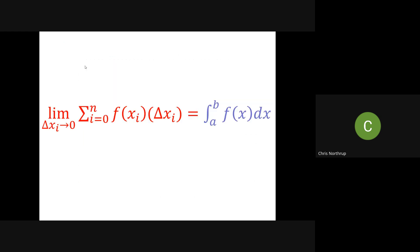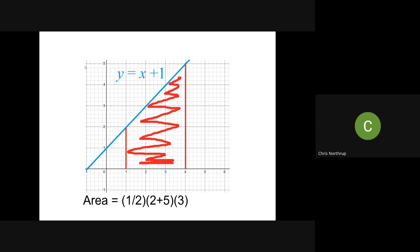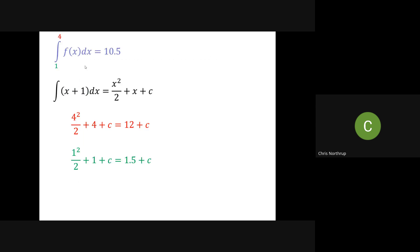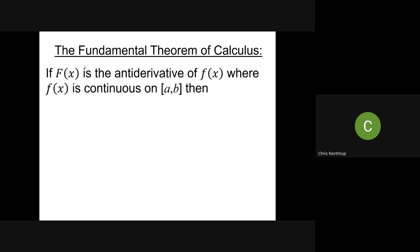Kind of why we use this area under a curve to mean definite integral. So this also leads us to what's called the fundamental theorem of calculus. If capital F is the antiderivative of little f, where little f is a continuous function on an interval, then it turns out that the integral from a to b, the definite integral, turns out to be the antiderivative evaluated at b minus the antiderivative evaluated at a.